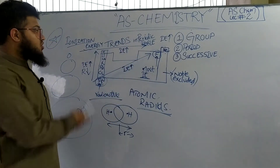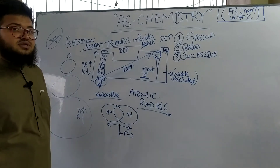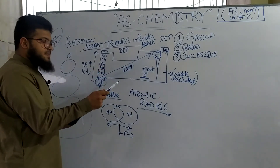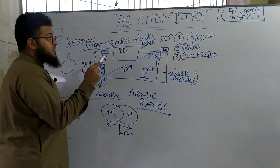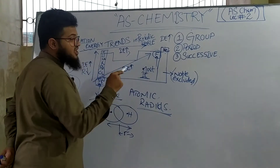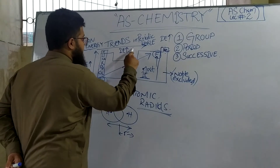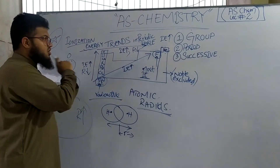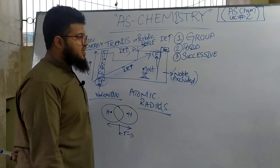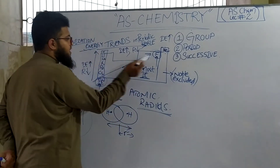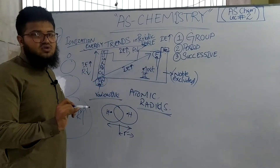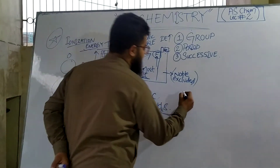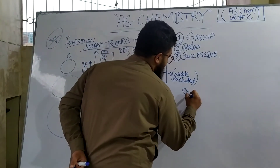Going across the period, the radius is expected to increase since electrons are being added, but actually the radius falls as you go across the period. The reason is that the shielding effect is constant across the period because the total number of shells remains constant.